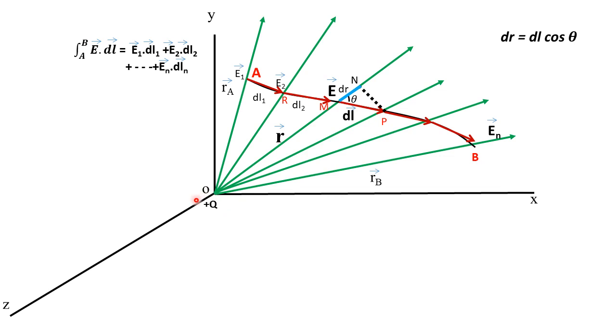You can see a point charge is placed at the origin O and this point charge plus Q is having electric field lines as shown in this diagram. An arbitrary path A, R, M, P, shown up to B is selected along this arbitrary path, a unit positive test charge is being moved.